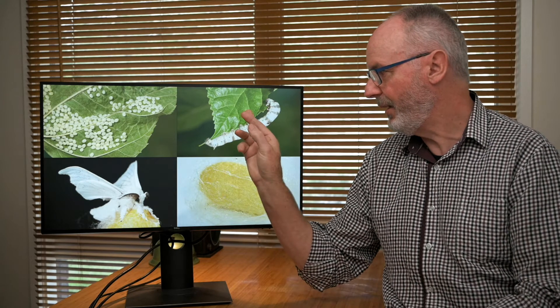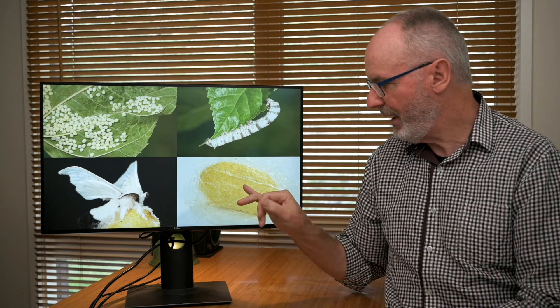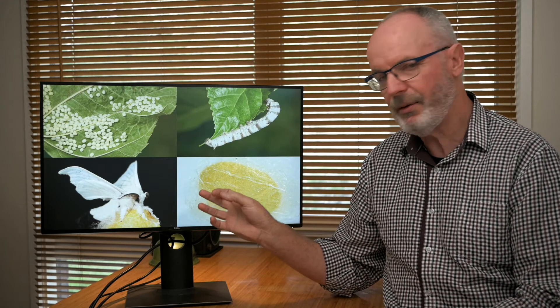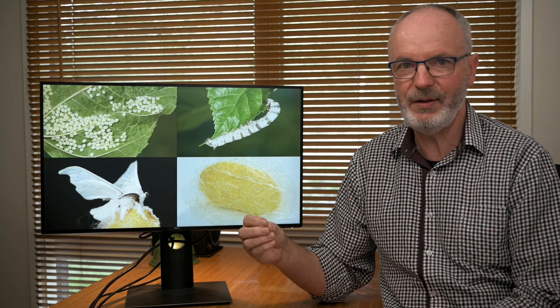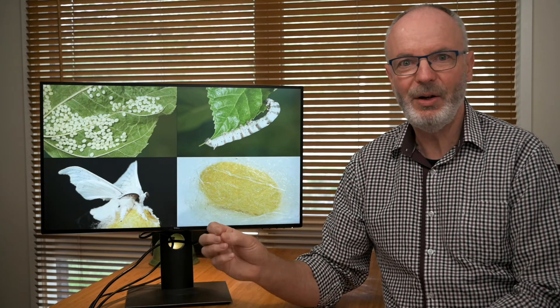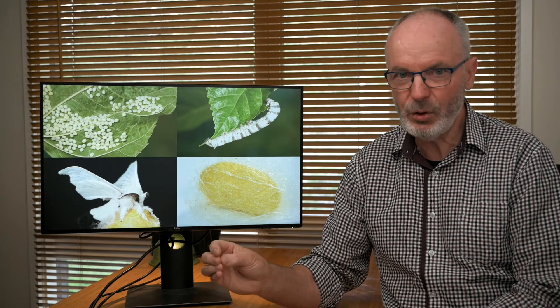Other insects have similar life cycles, including beneficial insects, and it's a good idea to know what the immature forms of beneficial insects look like so you don't accidentally squash them or kill them in some other way.